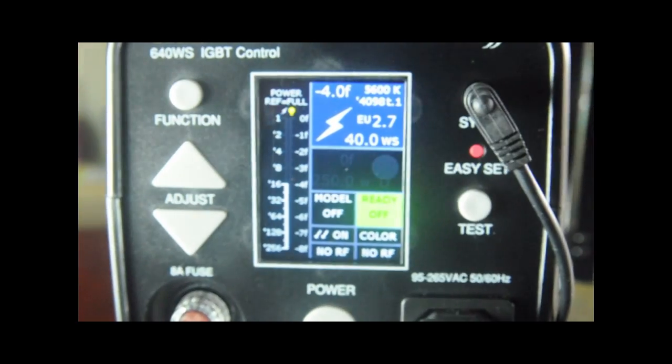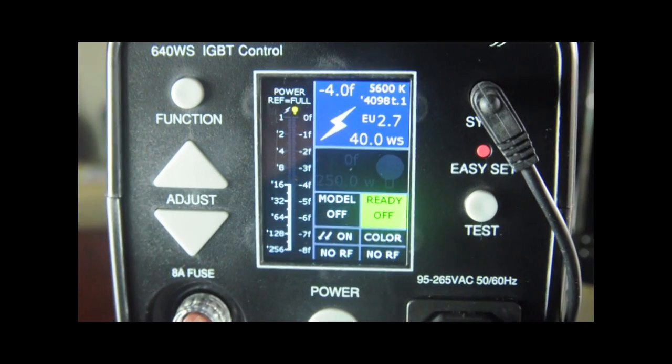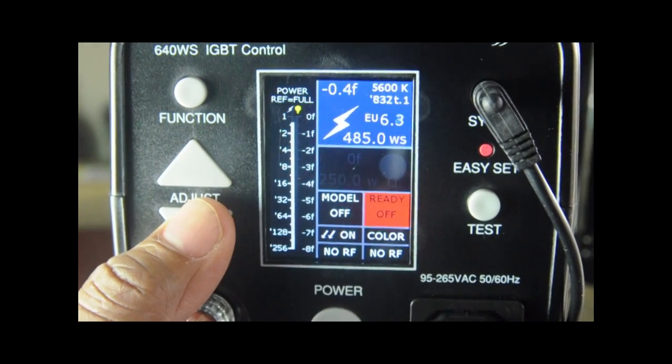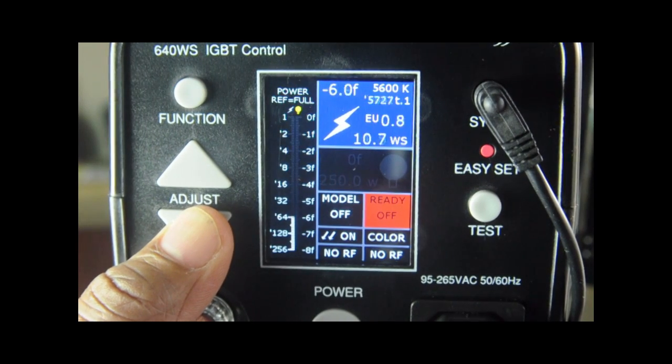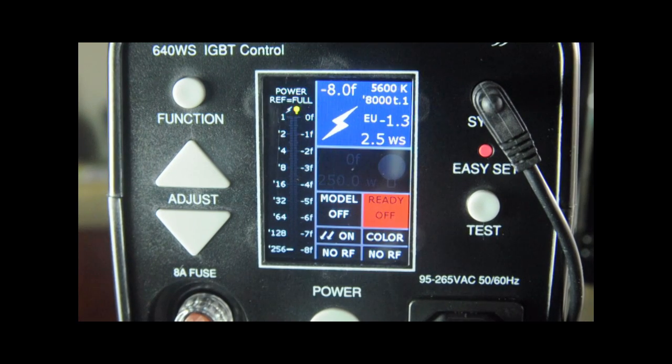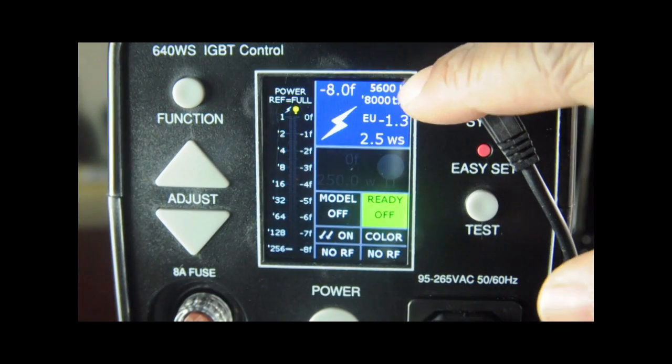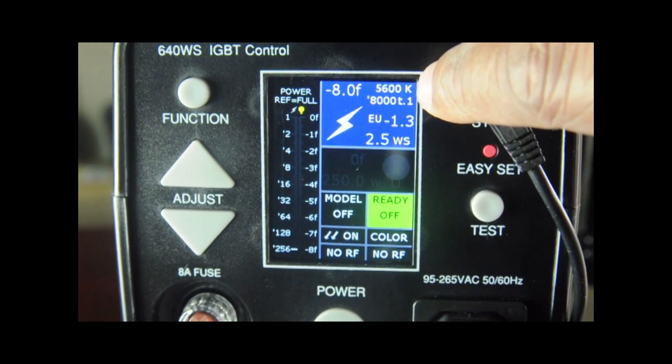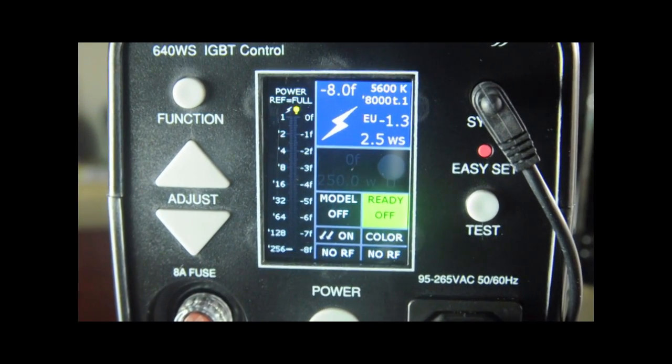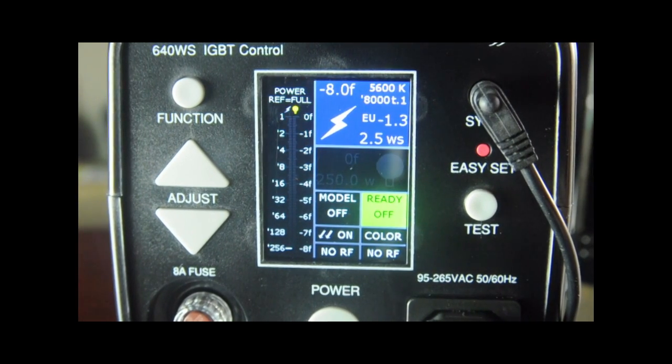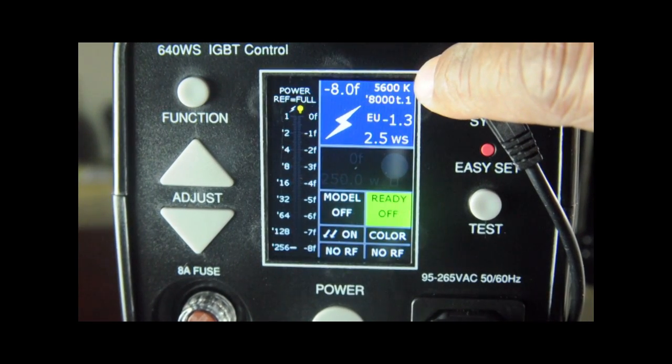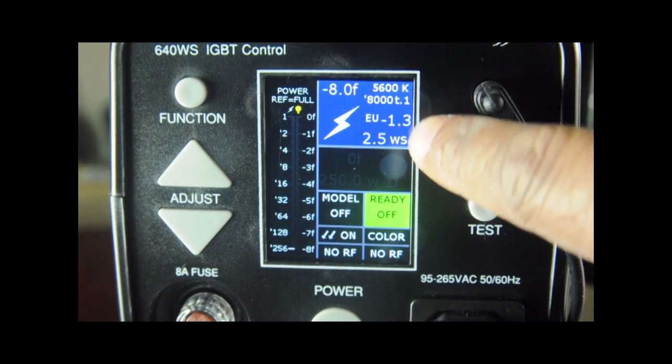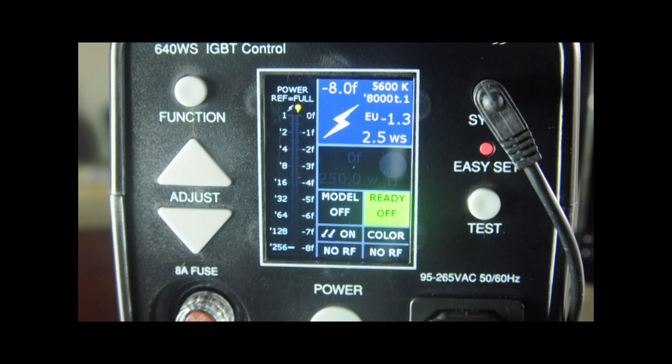On our main screen, you can adjust the power all the way from full power in tenth of a stop increments all the way down to a 256th of full power. You can see here I'm at minus eight f-stops from full power. My color setting is at 5600K. One of the beautiful things about this unit is if you stay in color mode, your color will be constant at 5600K no matter what power setting you're at. At our lowest power setting, which is 2.5 watts, we're at an 8000th of a second. That's a pretty short flash duration, good for freezing action.